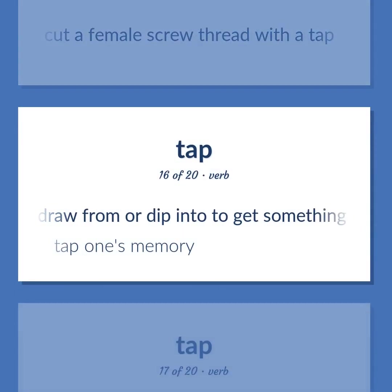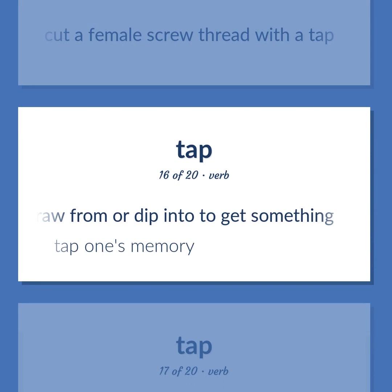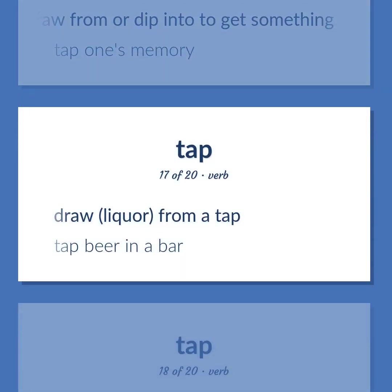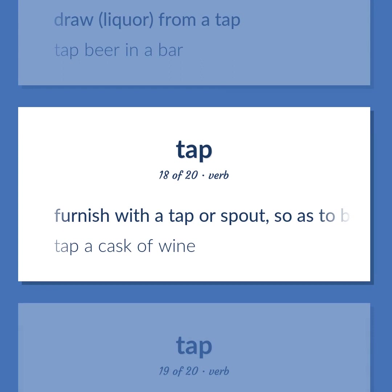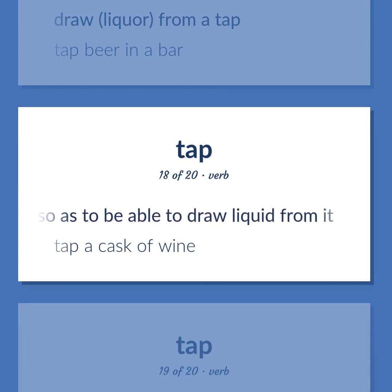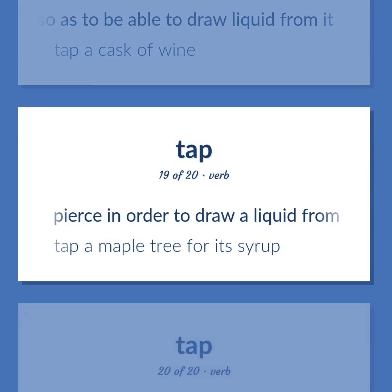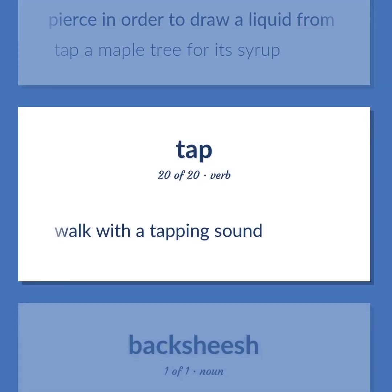Draw from or dip into to get something — tap one's memory. Draw liquor from a tap — tap beer in a bar. Furnish with a tap or spout so as to be able to draw liquid from it — tap a cask of wine. Pierce in order to draw a liquid from — tap a maple tree for its syrup. Walk with a tapping sound.